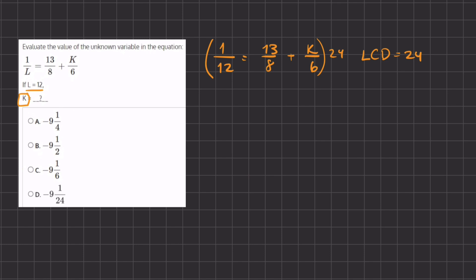We have 1 times 24 divided by 12 equals 13 times 24 divided by 8, and we have k times 24 divided by 6.